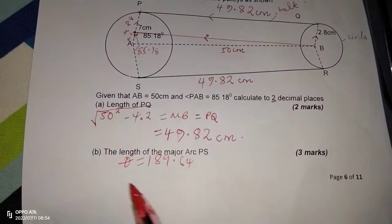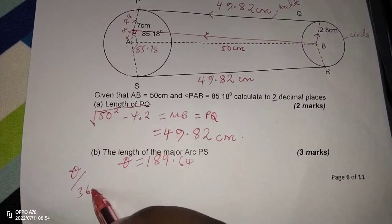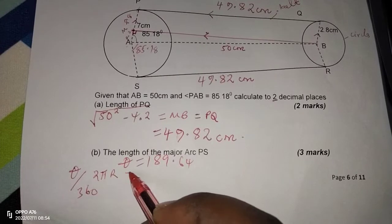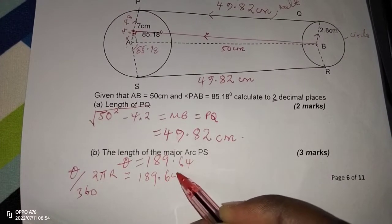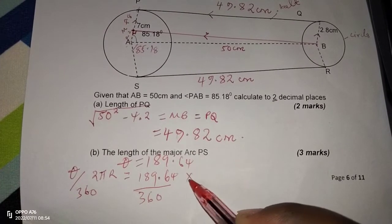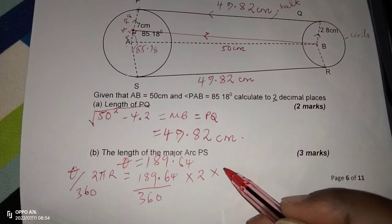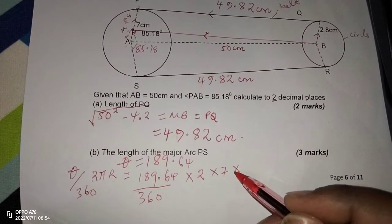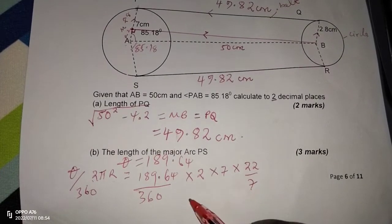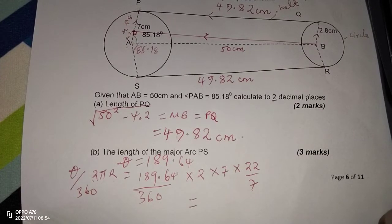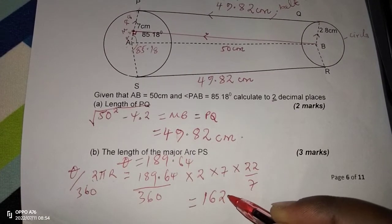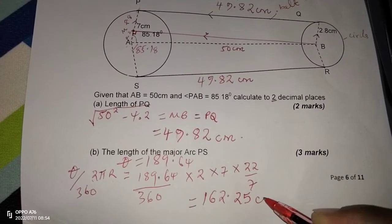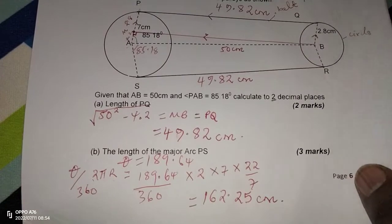Now, the length of an arc is given by theta divided by 360 times 2πR, which means we will have 189.64 out of 360 multiplied by 2 multiplied by a radius of 7. Then the pi, we can prefer 22 out of 7 as the pi in this case. So we're going to get 23.18 in 2 decimal places. These are also centimeters. So we've got the length of that major arc.